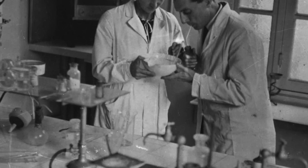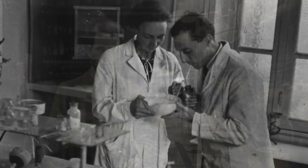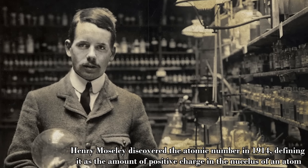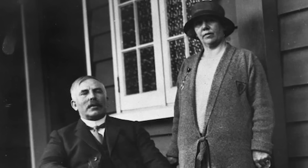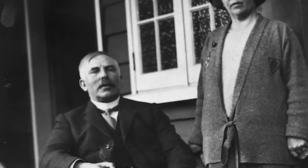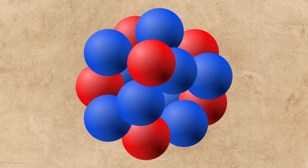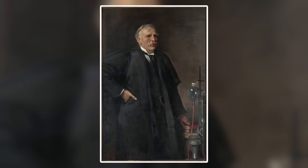As groundbreaking as these two decades of atomic research were, there were still some obvious atomic mysteries that had yet to get answers. One of these stood out in particular: the large disparity between the atomic number — the amount of protons in the nucleus — and the atomic weight of the atom. To try and solve this mystery, Rutherford proposed the idea of a new type of particle: one that consists of a proton and an electron bound together, having a neutral charge and existing in relatively the same quantity as the proton. However, Rutherford never proved this experimentally, and the task fell to one of his students, an English physicist by the name of James Chadwick.